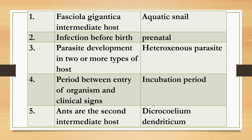First question: What is the intermediate host of Fasciola gigantica? Answer: aquatic snail. Second question: Infection before birth is known as prenatal. Third question: Parasitic development in two or more types of host is called a heteroxenous parasite.